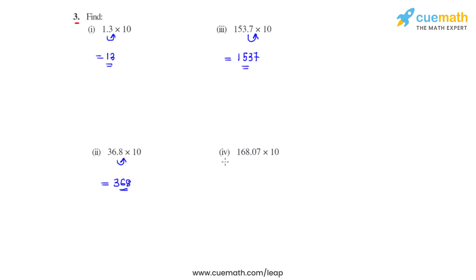Coming to the fourth bit, we have 168.07 multiplied with 10, so the decimal moves one place towards the right, and its new position gives us 1680.7, which is the answer for the fourth bit.